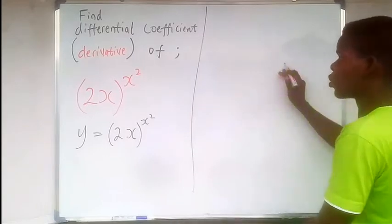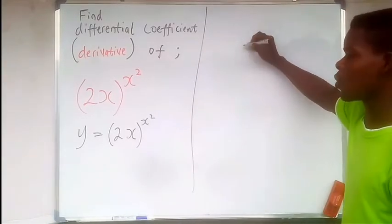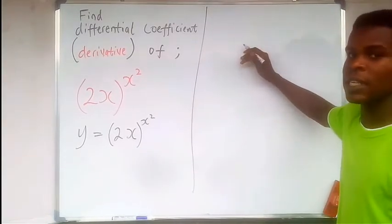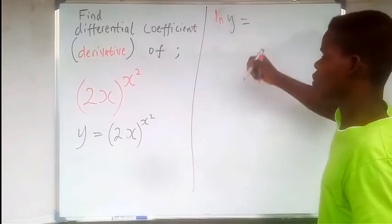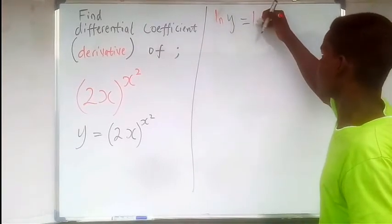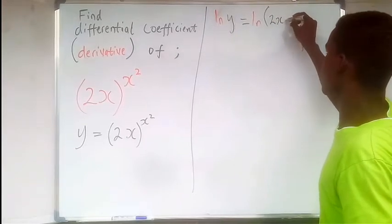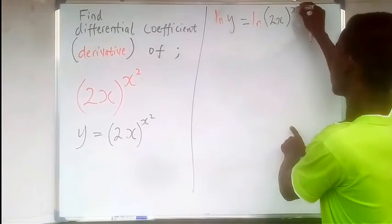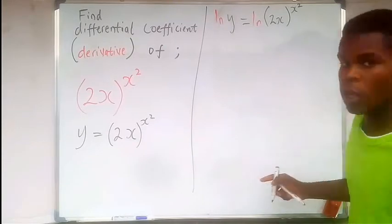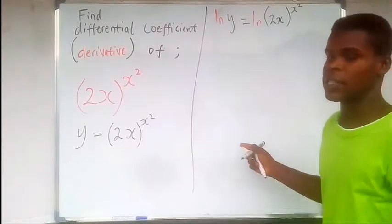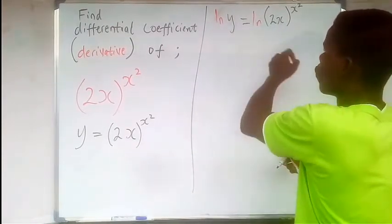To find the derivative of y with respect to x, the first thing is that we take the ln of both sides - ln of both sides. So ln of (2x) to the power x². Now we're going to go further.